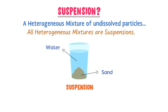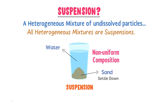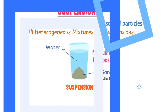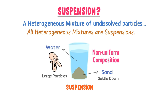Sand and water form a non-uniform or heterogeneous composition. If we leave sand plus water for some time, the sand settles down at the bottom and a clear layer of water appears at the top. We can spot the large particles of sand and water with the naked eye, so it is a heterogeneous mixture or suspension.